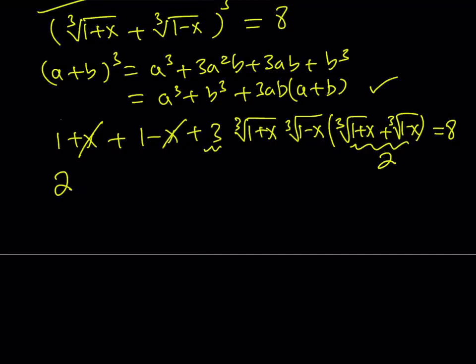And when you multiply by 3, that's going to be a 6. So 1 plus 1 equals 2 plus 6 times the cube root of, when you multiply these two things, you're going to get the cube root of 1 minus x squared from difference of two squares, and that is equal to 8.